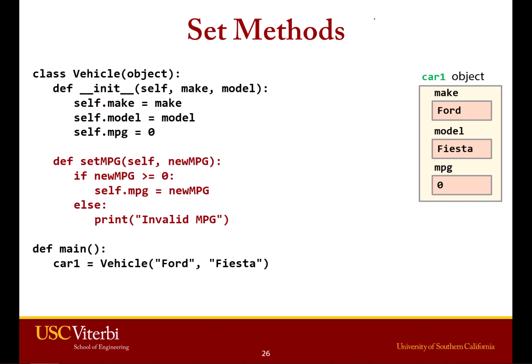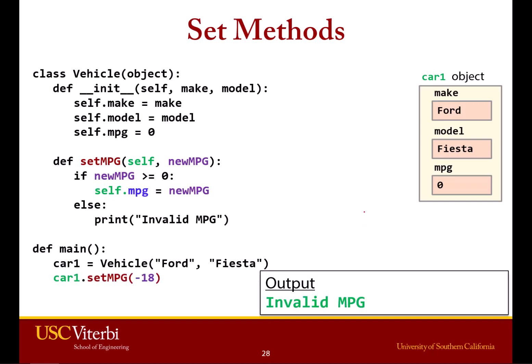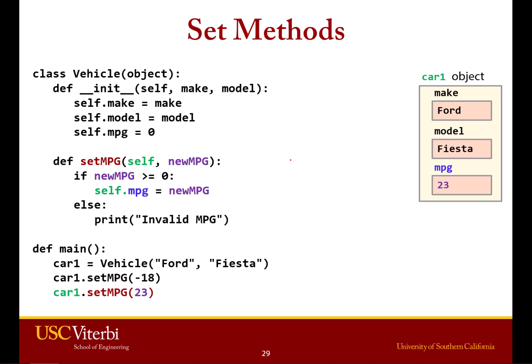So let's see what that looks like. We've got this function, setmpg. We're saying: if the mpg is greater than or equal to zero, we'll let you change it. If it's not — meaning it would be negative — we won't allow it. So now if we run this code and say car1.setmpg negative 18, it's not going to change the miles per gallon. It's going to keep it as zero and print out a message saying invalid. Whereas if we said setmpg 23, that's fine — we'll allow that to process. This is an example of a set method or a setter.